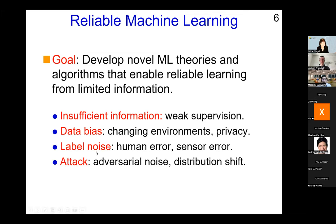The third topic is learning from noisy labels. Nowadays, data is collected at large scale, so we have many human errors in the data. Sometimes labels are collected by sensors, which naturally have errors. Then more seriously, adversarial attacks are quite critical. Deep learning systems can be easily attacked by slightly changing the input pattern — often called adversarial noise or adversarial perturbations. Coping with adversarial attacks is an urgent challenge. Today I will briefly cover the first three topics.